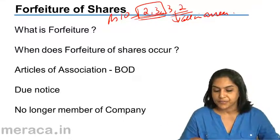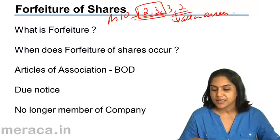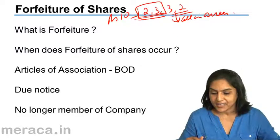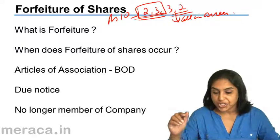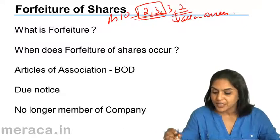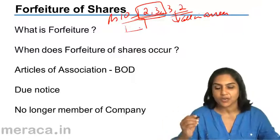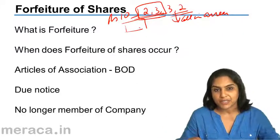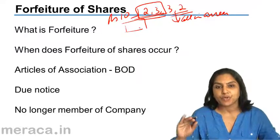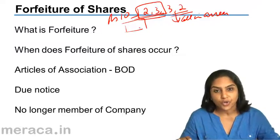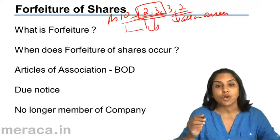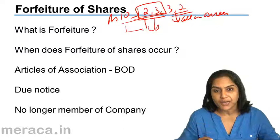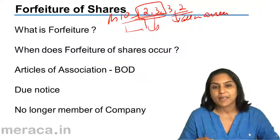What is forfeiture? Forfeiture is taking away a right. The shares of this particular shareholder — suppose we are talking of one share — may be forfeited. That means the share would be cancelled, the shareholder would no longer be a member of the company, and the money — the rupees 5 that he has already paid — would be forfeited or retained by the company.